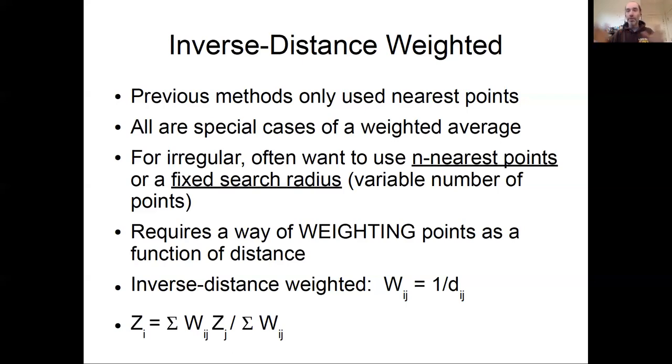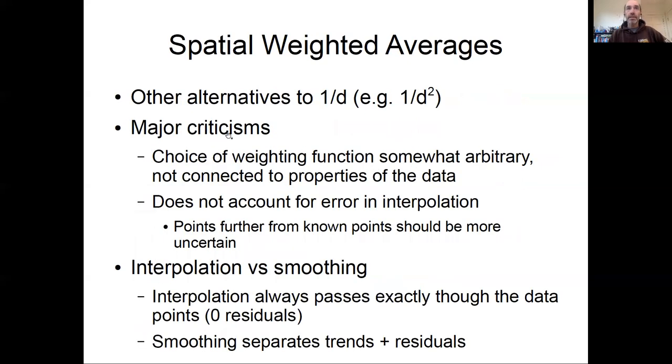There are alternatives to the simple inverse distance weighted approach, such as one over d-squared. Some of the pros and cons here: inverse distance weighting is simple. Unlike interpolation, the pro is it's involving more points than just the nearest neighbor, gives you a nice smoother interpolation. It's less sensitive to some of the noise in data because you're averaging over data points. So those are some of the positives.